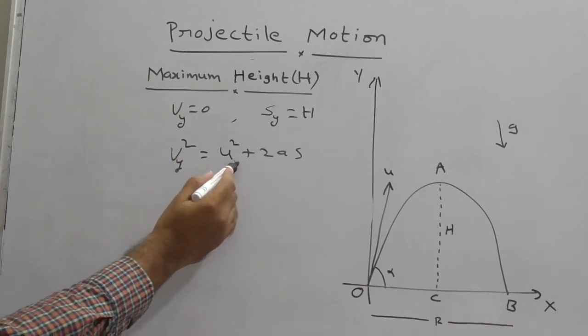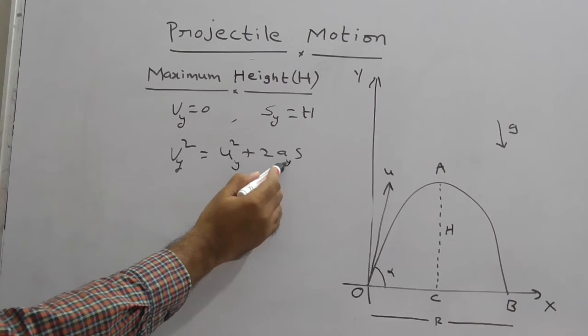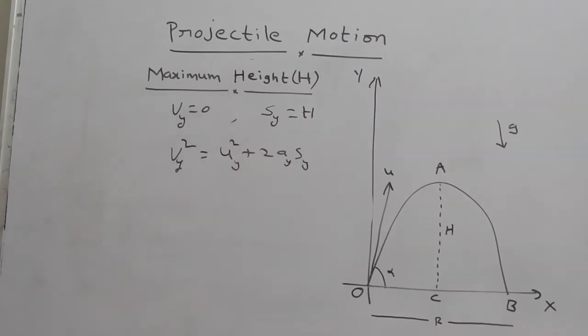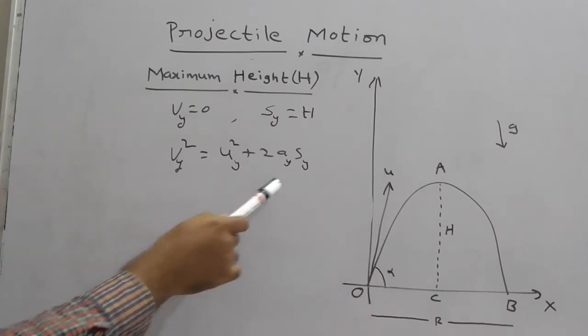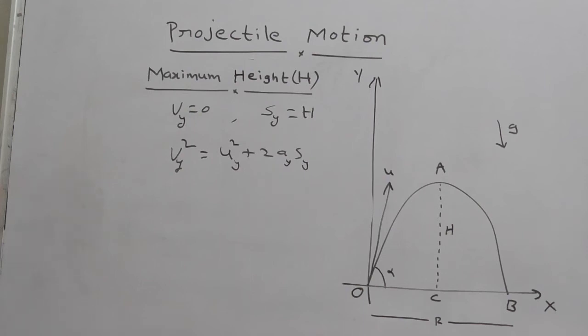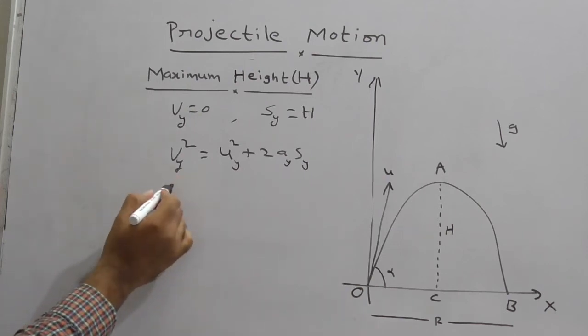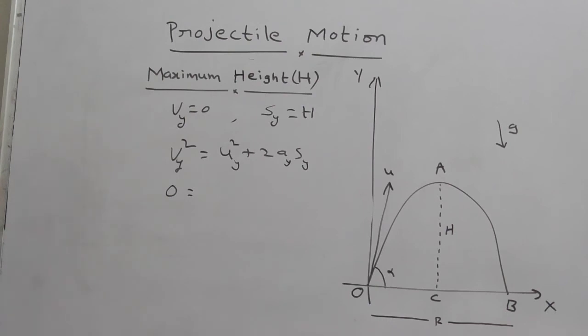Because projectile motion is two-dimensional, you can take x as well as y. Here the concept depends on y-axis, that's why we are taking with respect to y-axis. Now substitute all those points here. This value is zero.